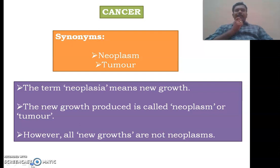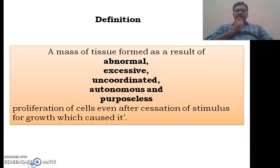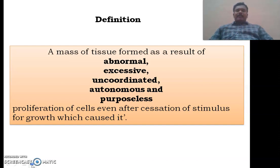For example, if you get a haircut, very soon after two to three days we will observe new growth of your hair, but it is not a tumor. So what is the actual definition of cancer or tumor or neoplasm? A neoplasm or tumor or cancer is a mass of tissue formed as a result of abnormal, excessive, uncoordinated, autonomous and purposeless proliferation of cells, even after the cessation of the stimulus for growth which caused it.